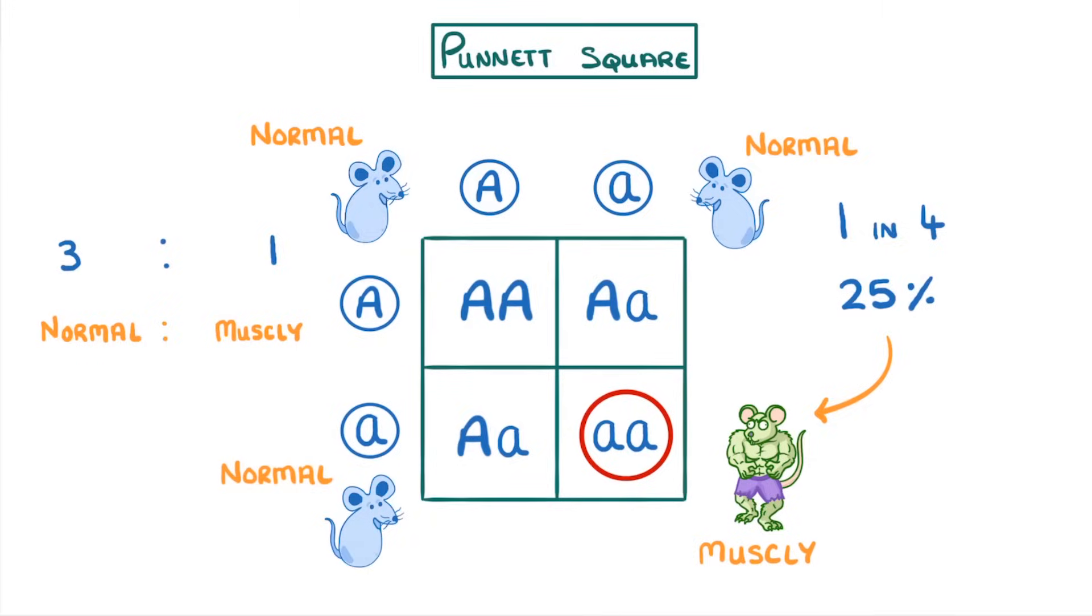Now just to make sure everything's clear, let's quickly whisk through this example again, but we'll do it with a genetic diagram. So we're still crossing two heterozygous mice.